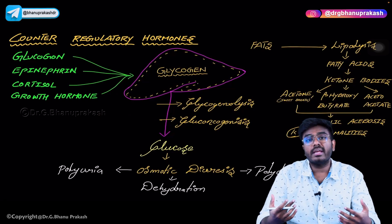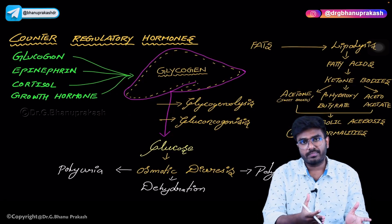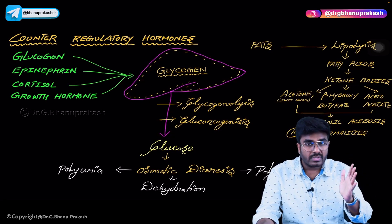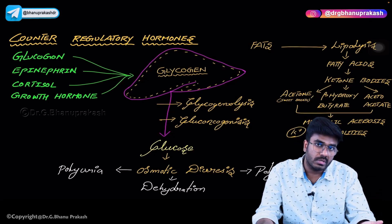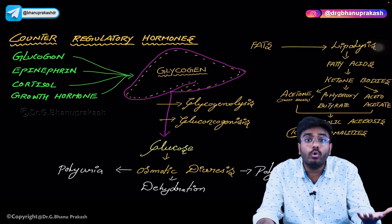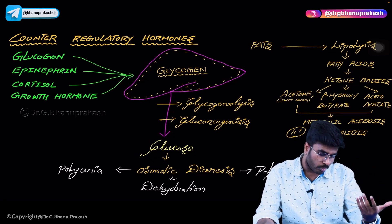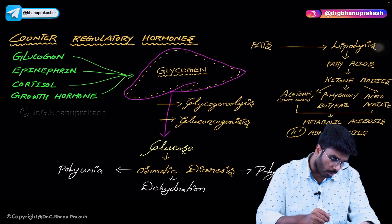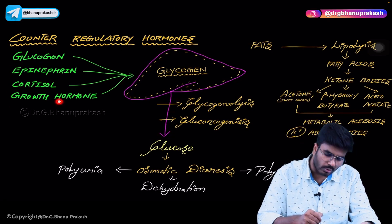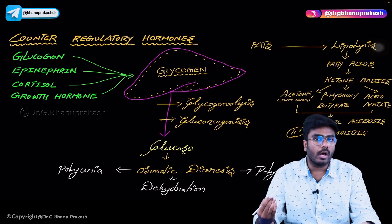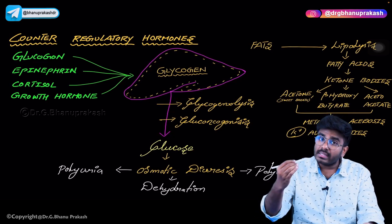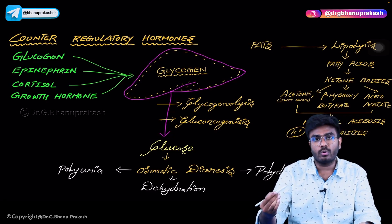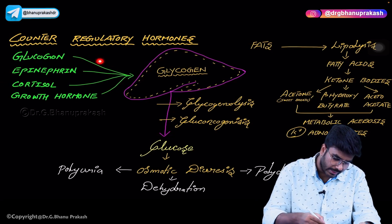Whenever tissues are not able to utilize glucose, the tissues want glucose. So tissues are sending the message that there is no glucose available — because yes, glucose is there but they cannot utilize it. So the body thinks there is no glucose and produces counter-regulatory hormones: glucagon, epinephrine, cortisol, and growth hormone. These hormones increase blood glucose levels and are produced whenever there is decreased blood glucose.